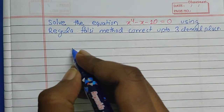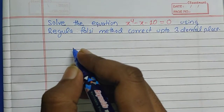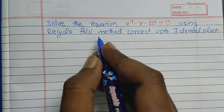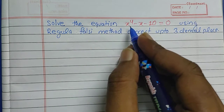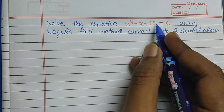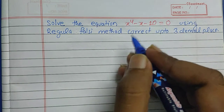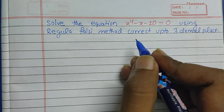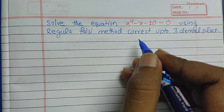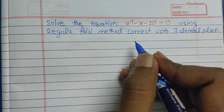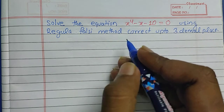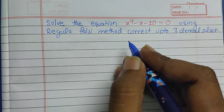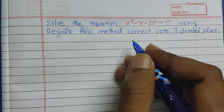Hello everyone, welcome to my YouTube channel Civil Learning Online. Today in this video I will be discussing the second method, which is the Regula Falsi method for analysis of a non-linear equation. The given equation is x to the power 4 minus x minus 10 equals zero. I have also added a video based on the bisection method — you can check it out via the link in the description. Let's begin the solution, and I hope after watching this video you will be able to solve any numericals related to the Regula Falsi method.